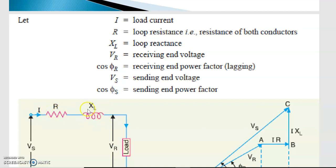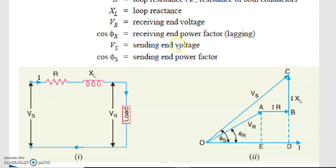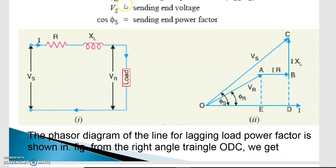The parameters to consider are: I is the load current, R is the loop resistance, XL is the loop reactance, Vr is the receiving end voltage, and cos φr is the receiving end power factor, which is lagging. The load is typically inductive — motors and similar loads are inductive — so the power factor is lagging. Vs is the sending end voltage and cos φs is the sending end power factor. This is the short transmission line represented as an equivalent circuit.